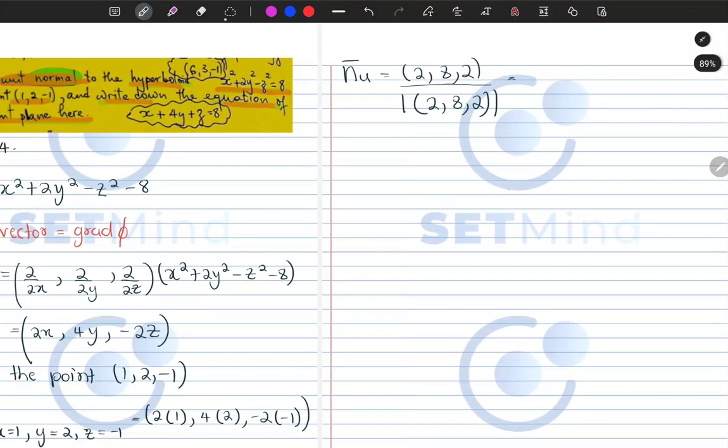So if you look at what is going to happen, we are going to have (2, 8, 2) divided by the square root of 2 squared plus 8 squared plus 2 squared.